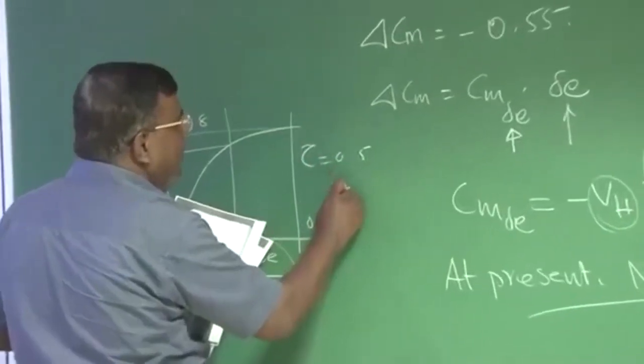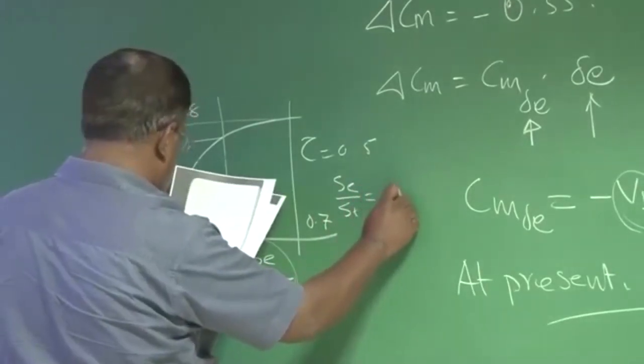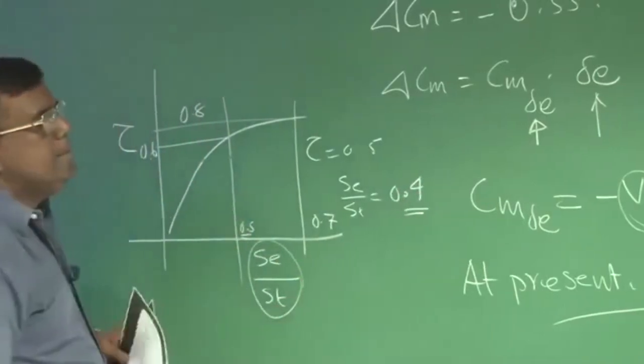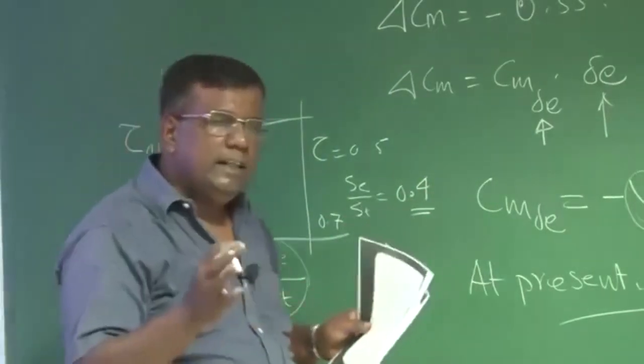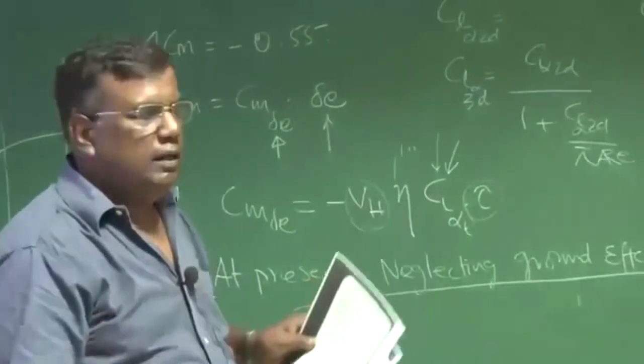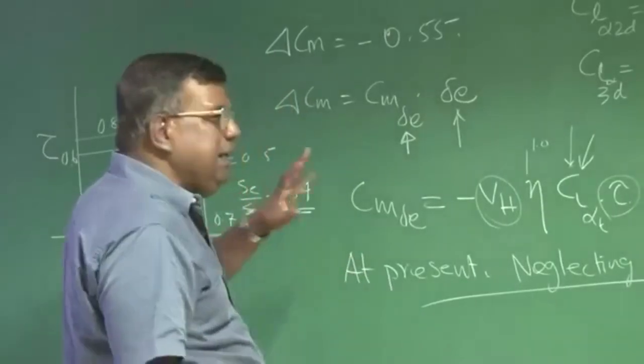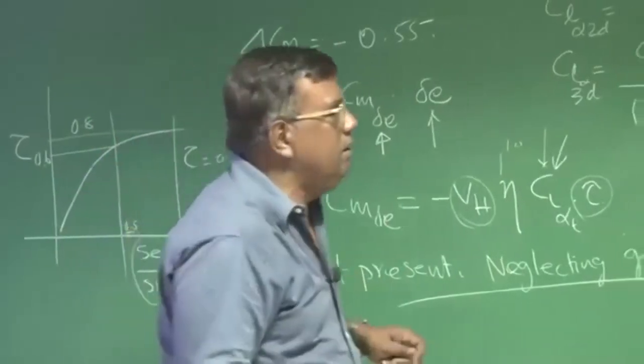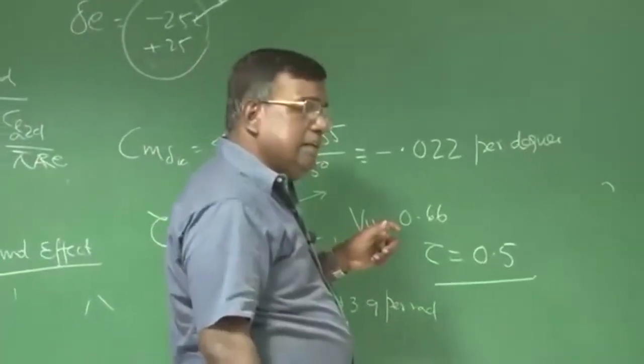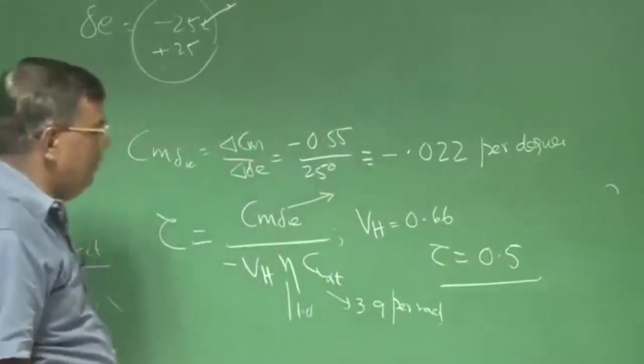If you see tau 0.5, if you see this chart which I have given in your class, tau 0.5 will mean SE by S tail around 0.4, that is 40 percent. That is how the guidelines are generated. Let the chord be 40 percent of the horizontal tail or 50 percent. But as a designer you should know that if I take around 40 to 50 percent of the chord stabilizer chord as elevator, I will get tau around 0.5, that is a good number.